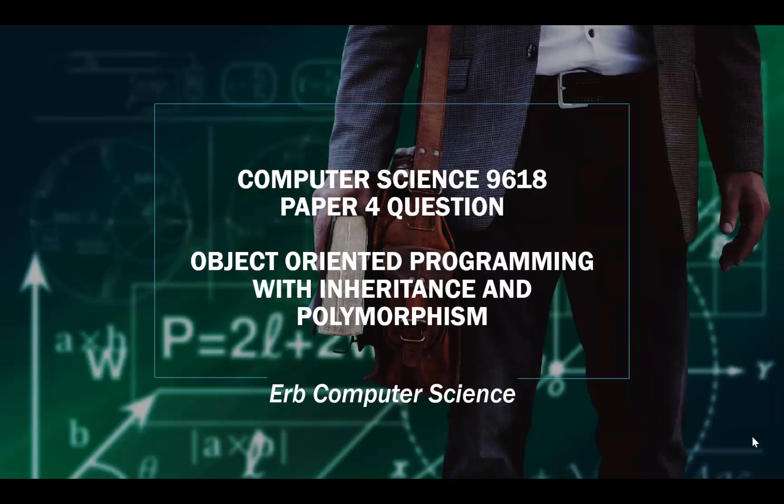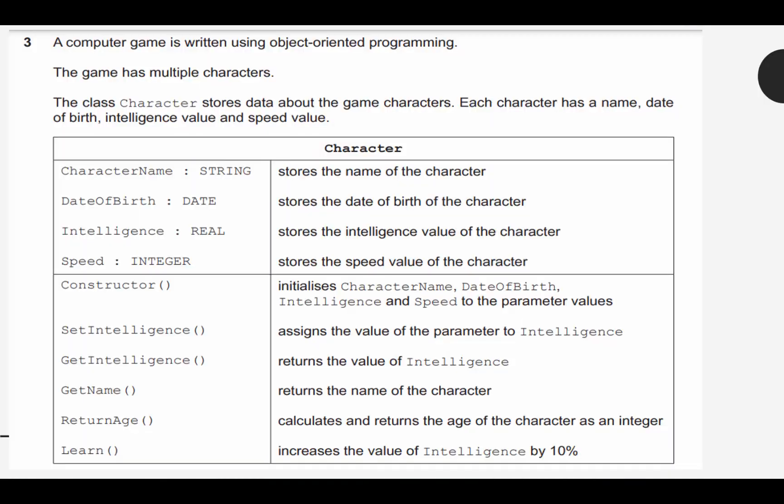In this video for Computer Science 9618, we take a look at another Paper 4 question, this one focusing on object-oriented programming that includes inheritance and polymorphism. So let's go ahead and take a look at this question.